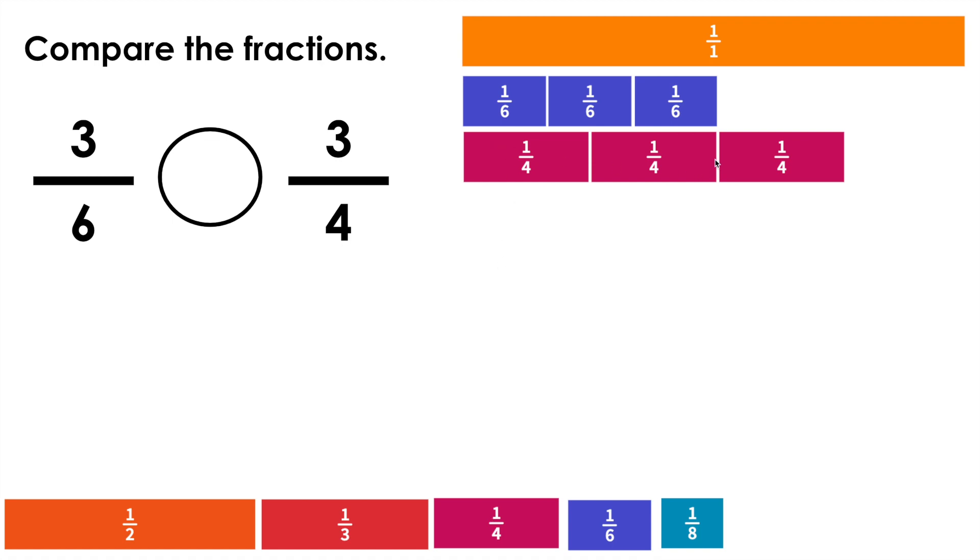We notice that 2 fourths is equivalent to 3 sixths. Therefore, if we have an extra fourth, we know that 3 fourths is greater than 3 sixths. We can say that 3 sixths is less than 3 fourths.